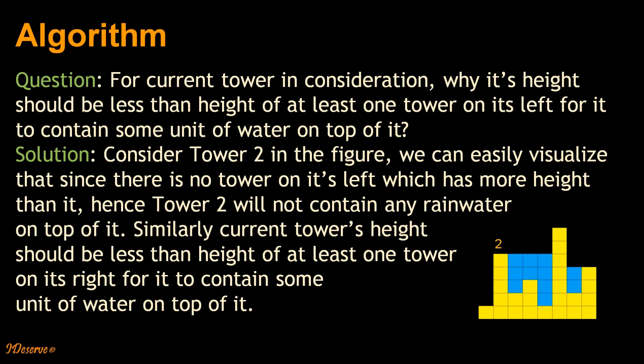So consider tower 2 in the figure. We can easily visualize that since there is no tower on its left which has more height than it, hence tower 2 will not contain any rain water on top of it.